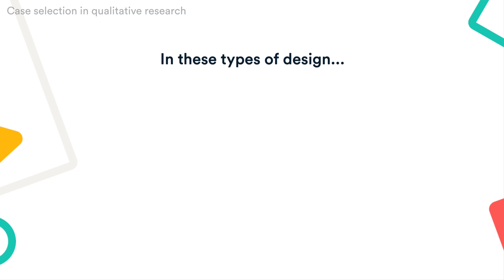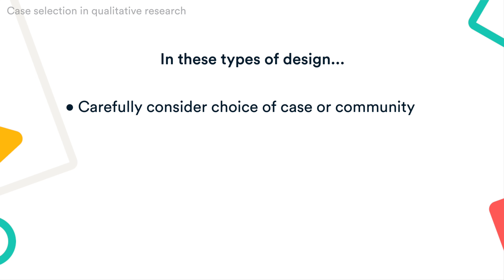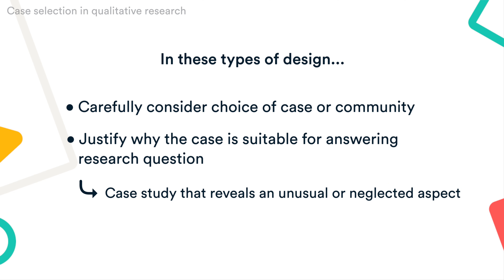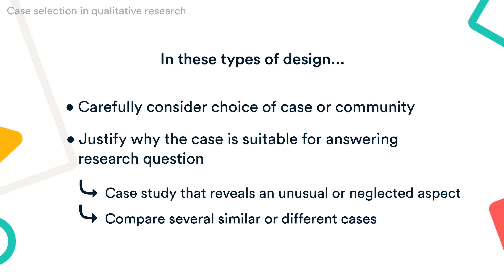For example, in an ethnography or case study, your aim is to deeply understand a specific context, not to generalize to a population. Instead of sampling, you may simply aim to collect as much data as possible about the context you're studying. In these types of design, you still have to carefully consider your choice of case or community. You should have a clear rationale for why this particular case is suitable for answering your research question. For example, you might choose a case study that reveals an unusual or neglected aspect of your research problem, or you might choose several very similar or very different cases in order to compare them.